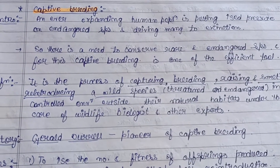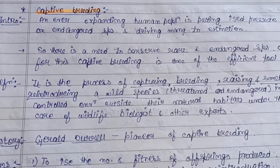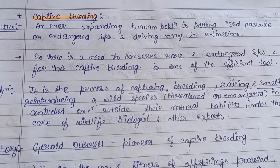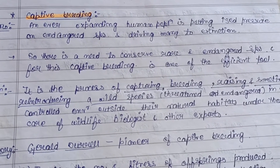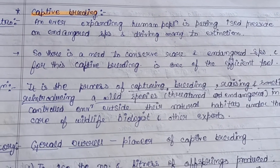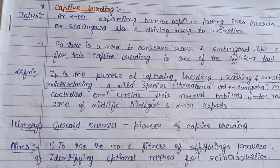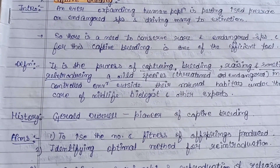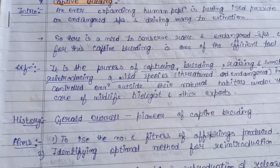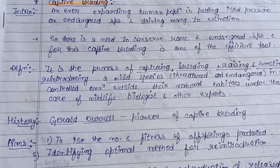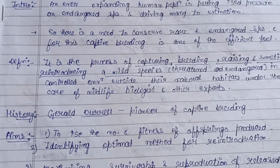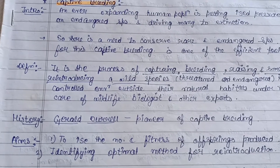Captive breeding is practiced in zoos, botanic gardens, aquaria, seed banks, and similar facilities. From a historical perspective, Gerald Durrell was the pioneer of captive breeding.